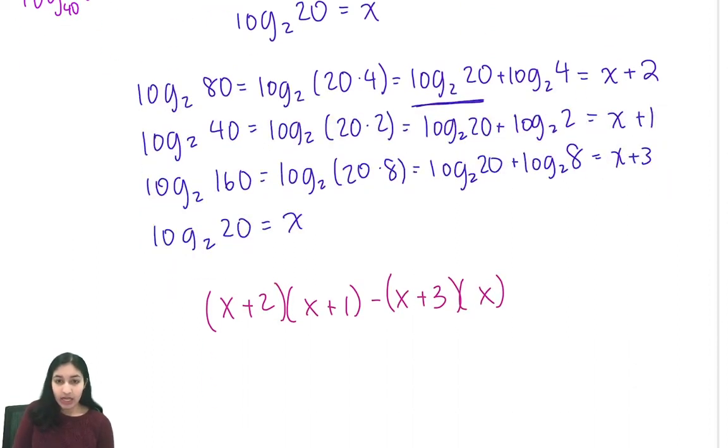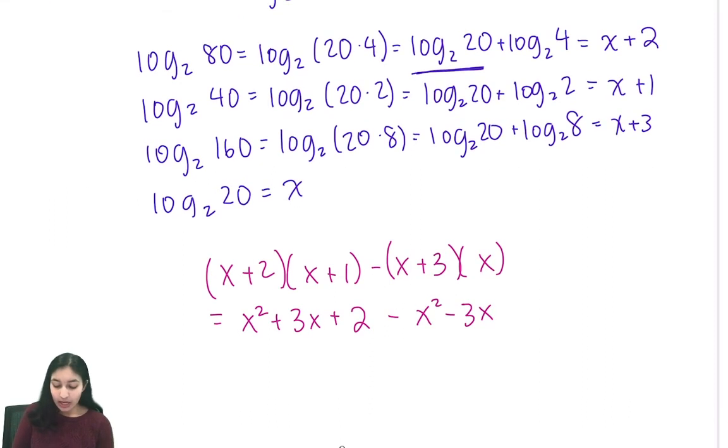Now we can expand these. x plus 2 times x plus 1 is x squared plus 3x plus 2. x plus 3 times x is x squared plus 3x. So we subtract off x squared and 3x. And you'll note that this is just 2. And that's our answer.